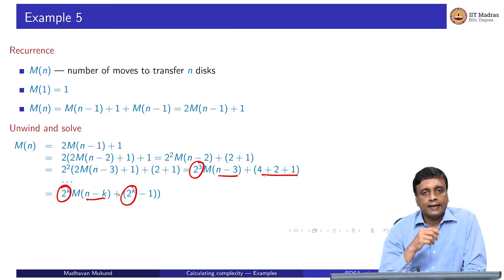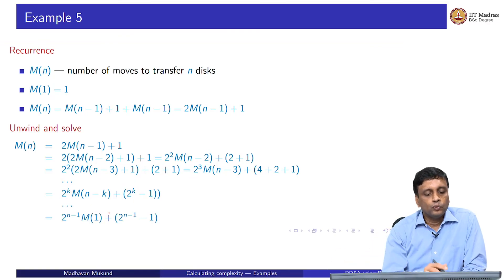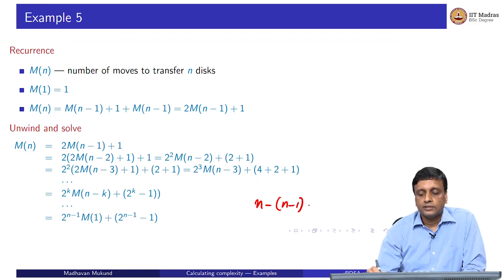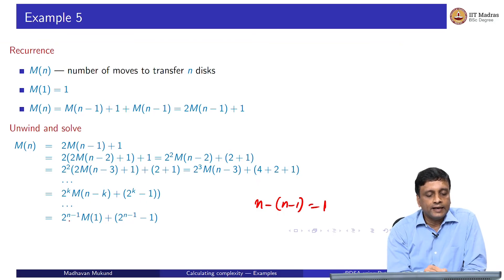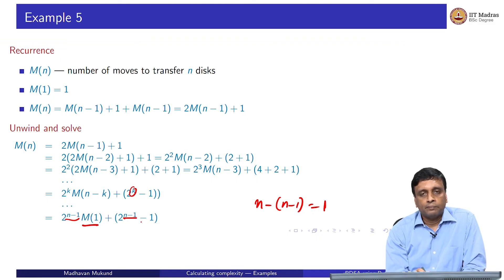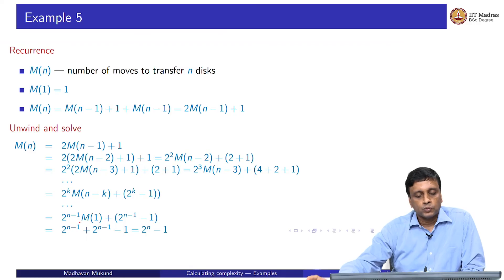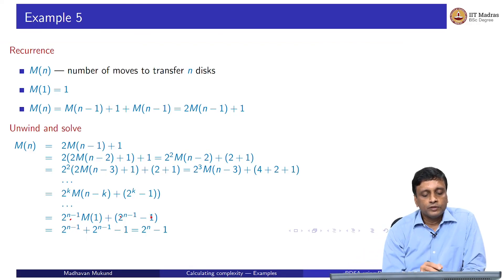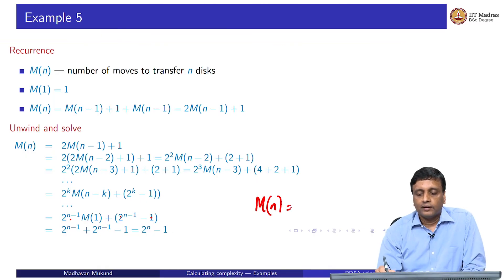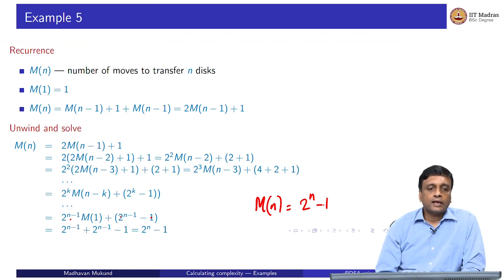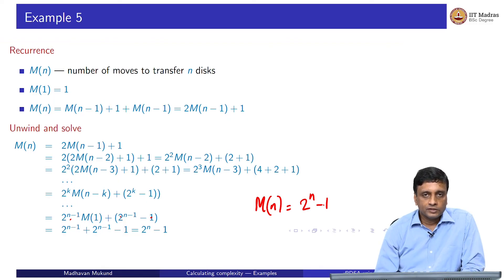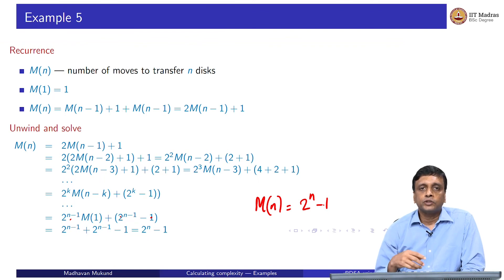After k steps of substitution, the general form is M(n) = 2^k · M(n−k) + (2^k − 1). Eventually, when we take k = n−1, we reach M(1), and n − (n−1) = 1. So we get M(n) = 2^(n−1) · M(1) + (2^(n−1) − 1). Since M(1) = 1, this gives M(n) = 2^(n−1) + 2^(n−1) − 1 = 2^n − 1. So the Tower of Hanoi recursive solution actually takes exponential time. If you are given n disks, it is going to take 2^n − 1 moves to transfer all the disks.